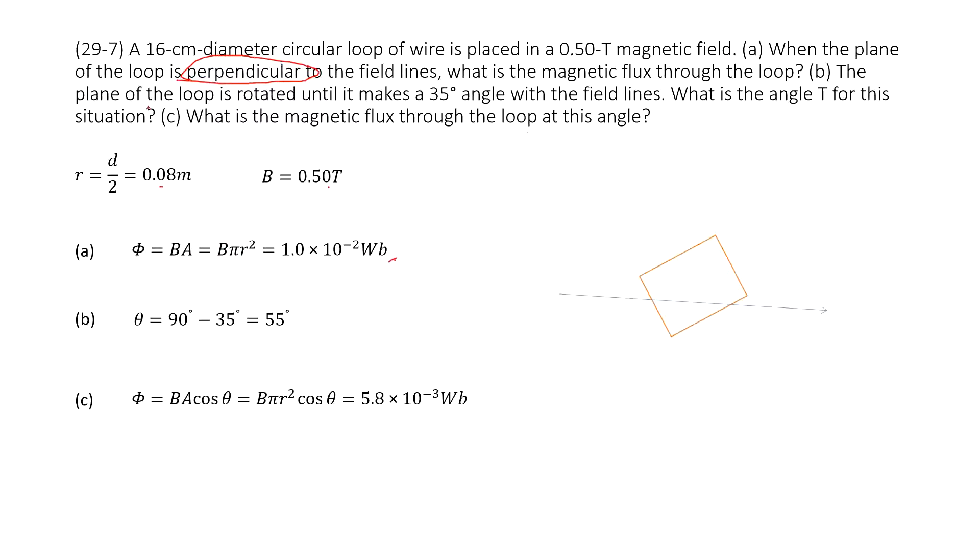The next one tells you the plane of the loop is rotated until it makes a 35° angle with the field line. So we can see this is the field line, and this loop makes an angle, 35 degrees. What is the angle θ for this situation?